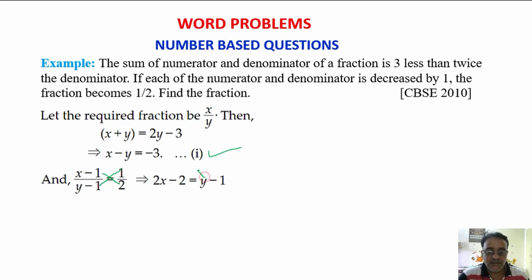Now, shift y to this side and minus 2 to this side. So, we will get 2x minus y is equal to 2 minus 1 that is 1. Let it be equation number 2.